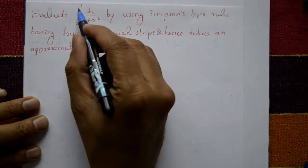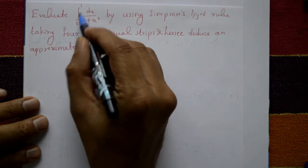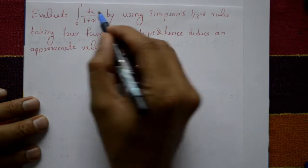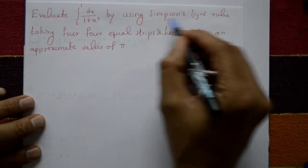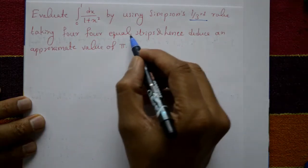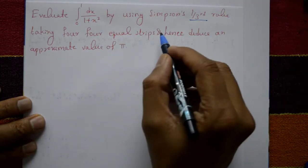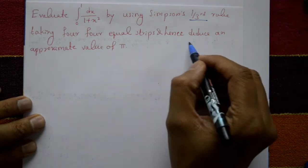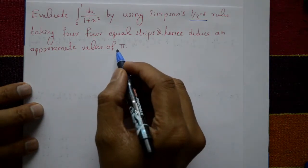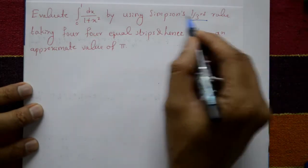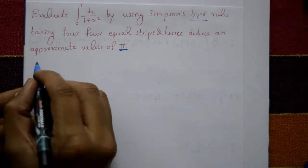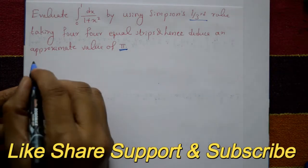Evaluate the integration of 0 to 1 of 1/(1+x²) dx using Simpson's one-third rule, taking four equal strips, and hence find the approximate value of π. Also find the theoretical value of π.